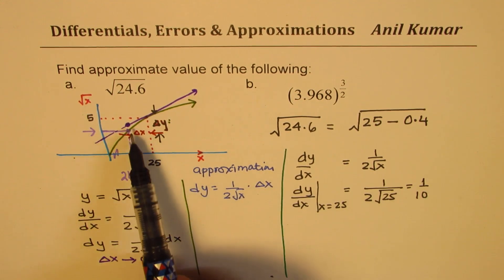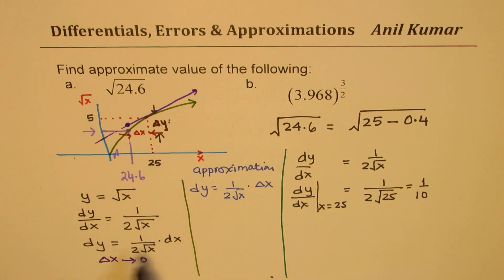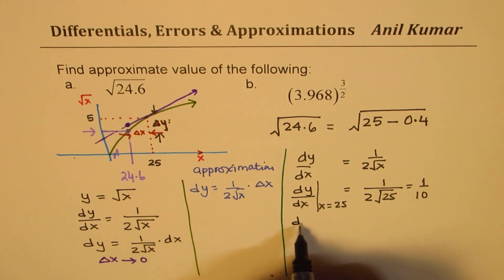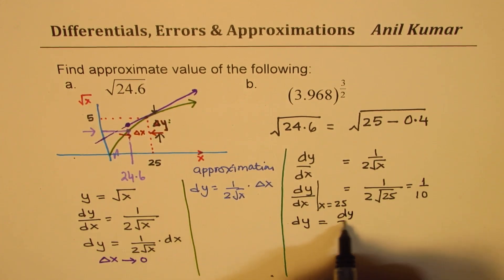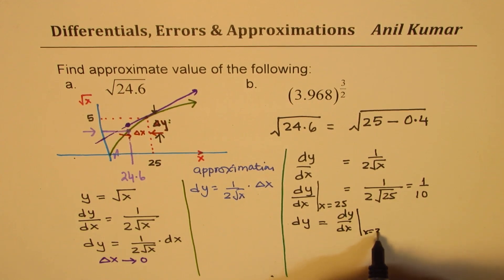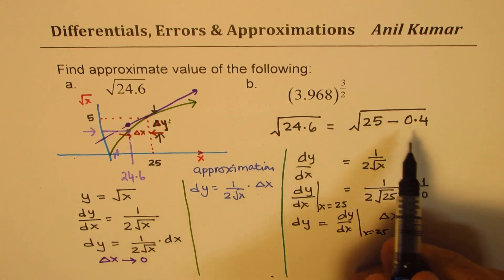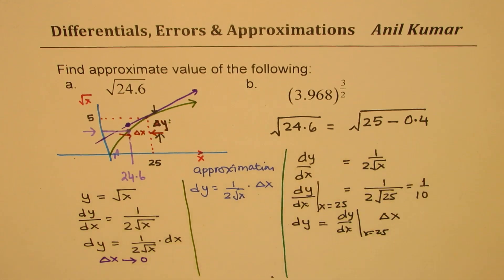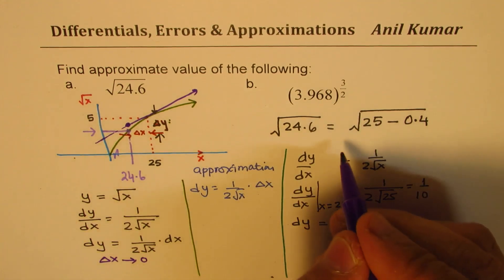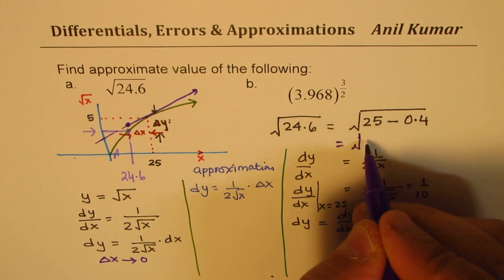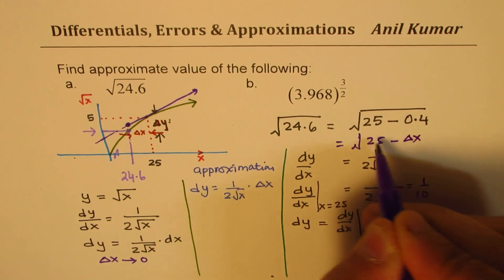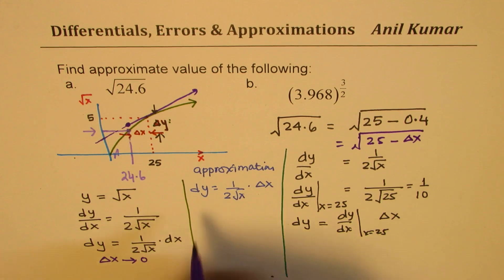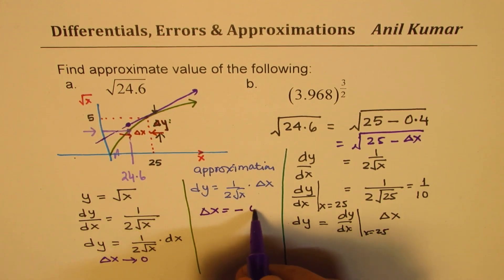On this line, I am going to find the approximate value using this formula. We say dy or delta y is the value of dy/dx at x equals to 25, times delta x. And what is delta x for us? Delta x is 0.4. So what we are doing here is substituting this as square root of 25. And in this case, it is a negative value of delta x, so for us, delta x is minus 0.4.